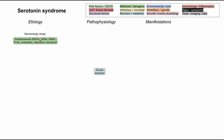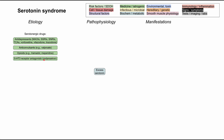Antidepressants include SSRIs, SNRIs, monoamine oxidase inhibitors, tricyclic antidepressants, and others like trazodone. Next, anticonvulsants like valproate have serotonergic activity. Some opioids like tramadol and meperidine. Some anti-nausea medications like ondansetron, which is a 5-HT3 receptor antagonist.